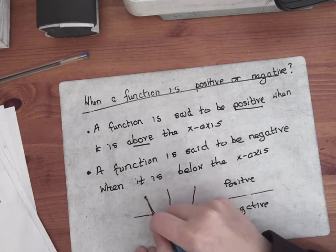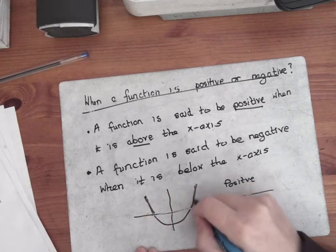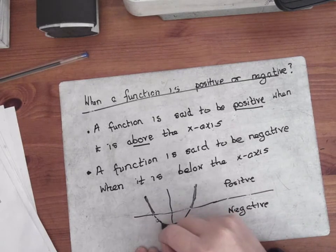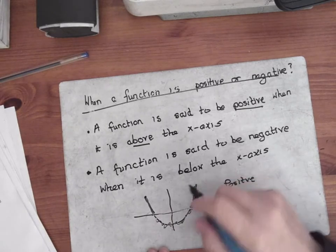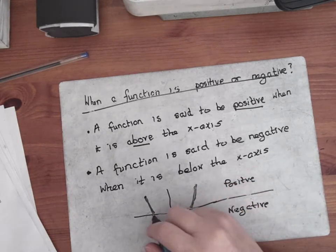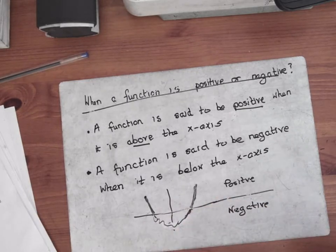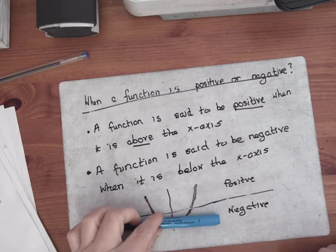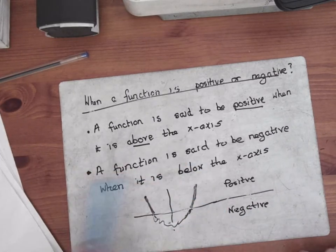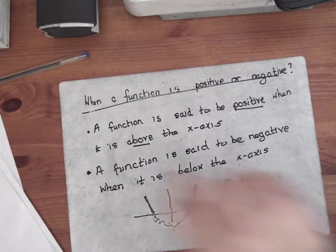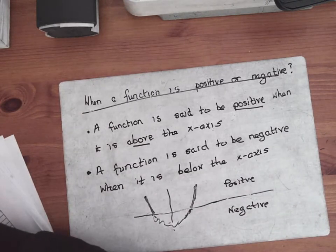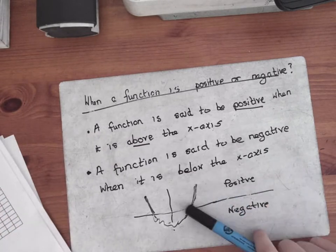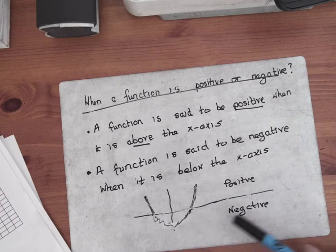So if I had a red biro, these two bits are positive and the loopy bit down at the bottom — if I do a squiggly line — it's negative. So the heavy lines are positive and if I do just a squiggly line below the x-axis, that's the negative bit. Positive and negative just means above or below the x-axis. The y-axis has no bearing whatsoever, so don't worry about the y-axis.